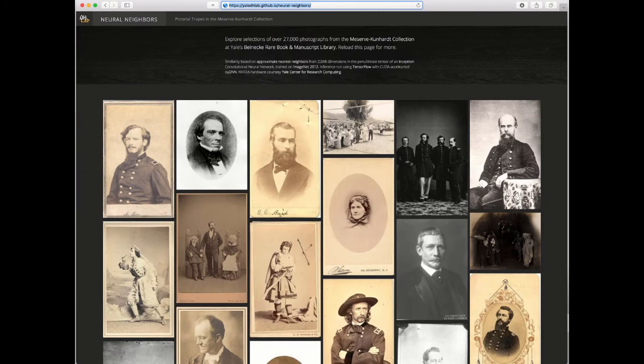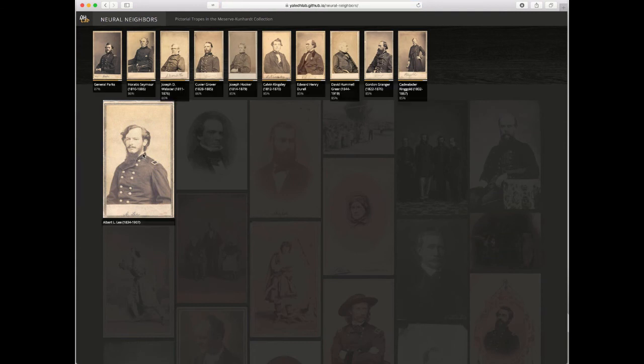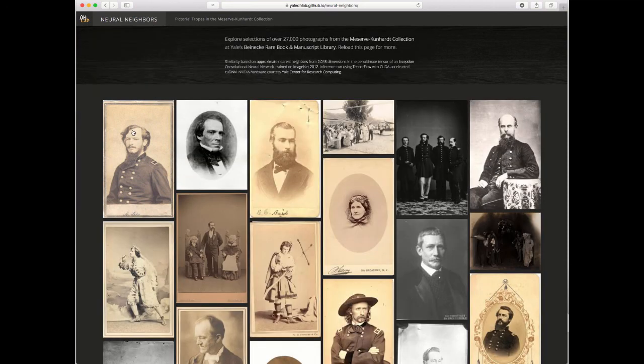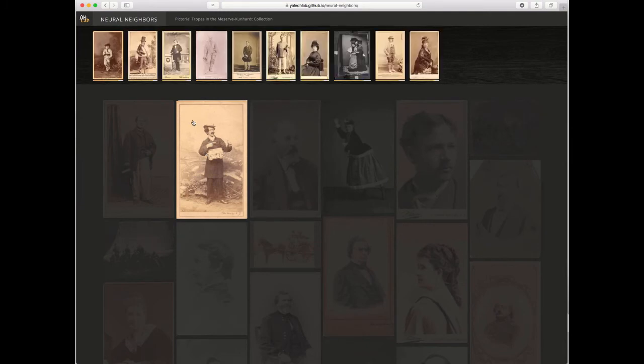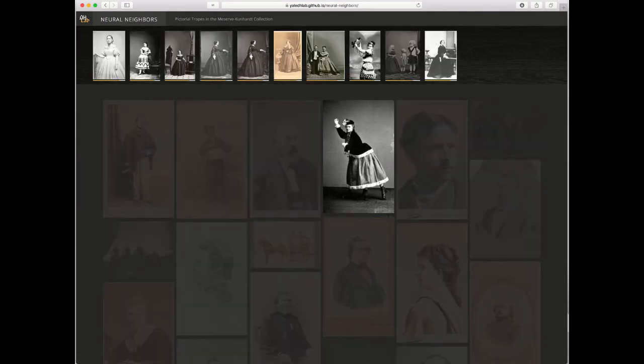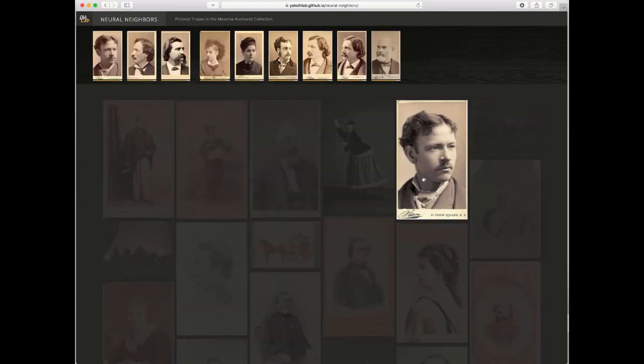All of this is being determined by the semi-final layer of the convolutional neural network doing approximate nearest neighbors and finding the images that are closest to, in this case, this particular actor or this particular soldier. None of what's being used is the text. We're not using the text at all. This is pure raster processing where we're taking signal only from the images that are in front of us and not from the description of the image.